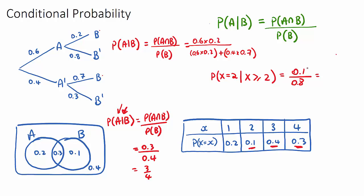These conditional probability questions appear in the harder sections of exams. The goal is to be confident with the formula, or really understand what the question is asking. If it says given that, that event becomes the denominator, and you find the intersection of the two for the numerator. I encourage you to practice a bunch of these questions throughout some past IB papers. Good luck.